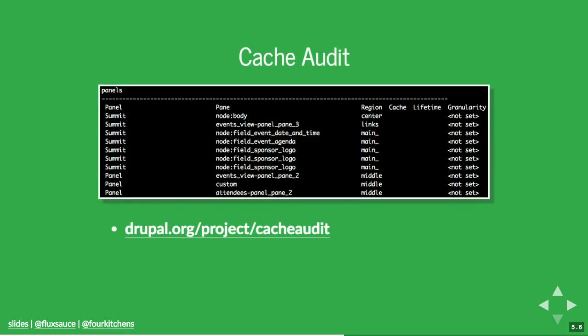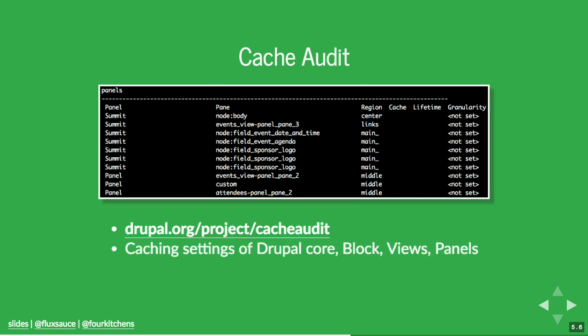Cache Audit is another tool — Site Audit does audit caches and there's a fair amount of crossover between the two. But Cache Audit reports in a much more granular way. It reports the caching settings of Drupal core, Block, Views, and Panels. Panels is different because Site Audit does not actually audit Panels — just didn't get around to it. It's a great tool and provides some really cool recommendations.